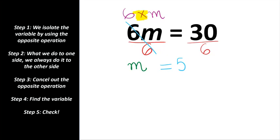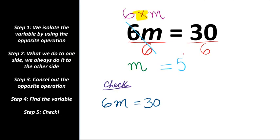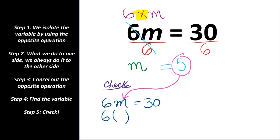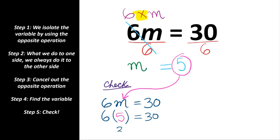Let's check our work to make sure that m actually equals 5. We are going to copy down the equation and substitute 5 into it. 6 times 5 is 30 — right side equals the left side. Give yourself a check mark. This means that m actually equals 5.